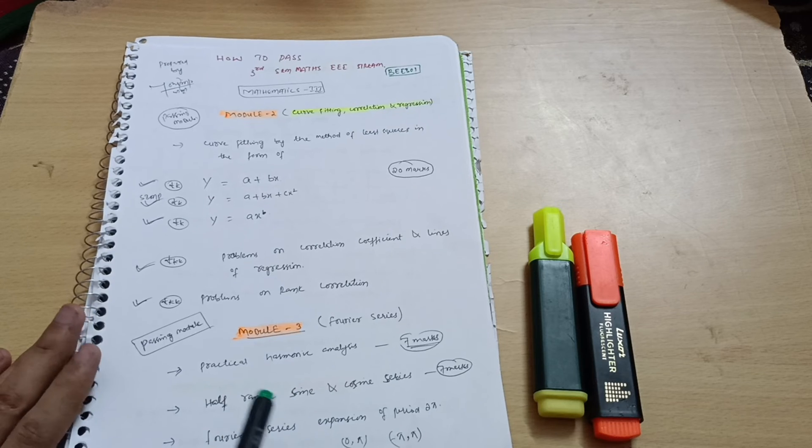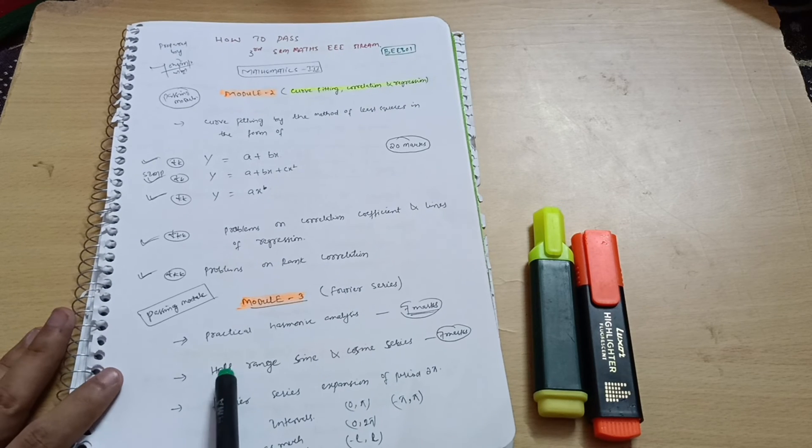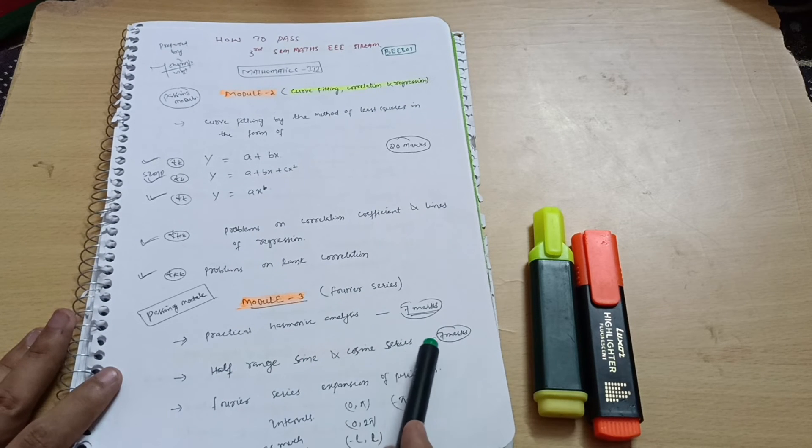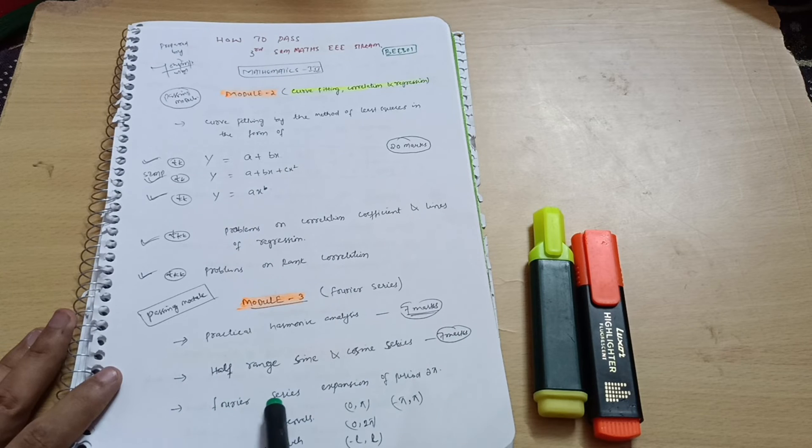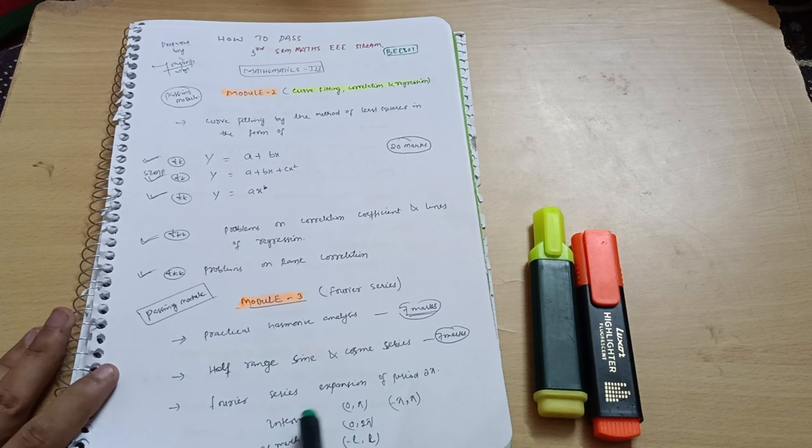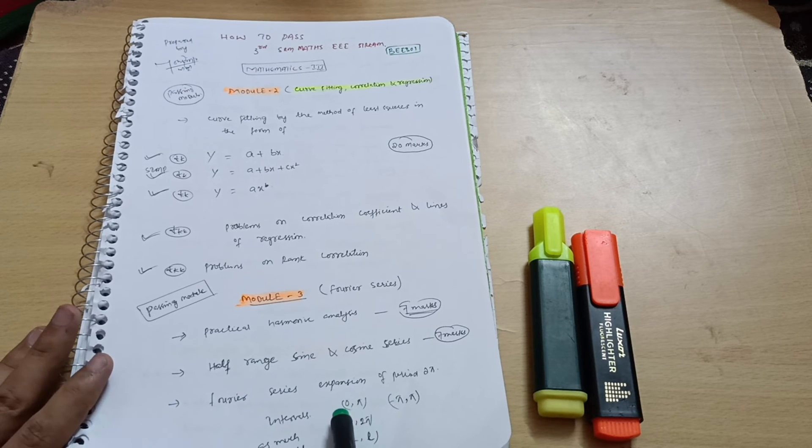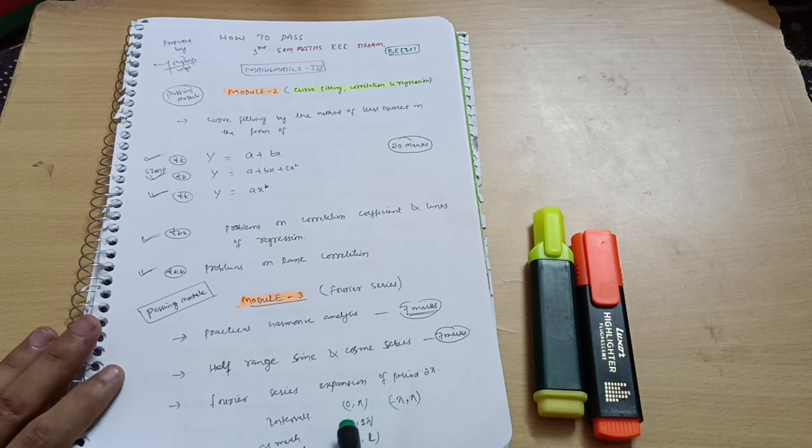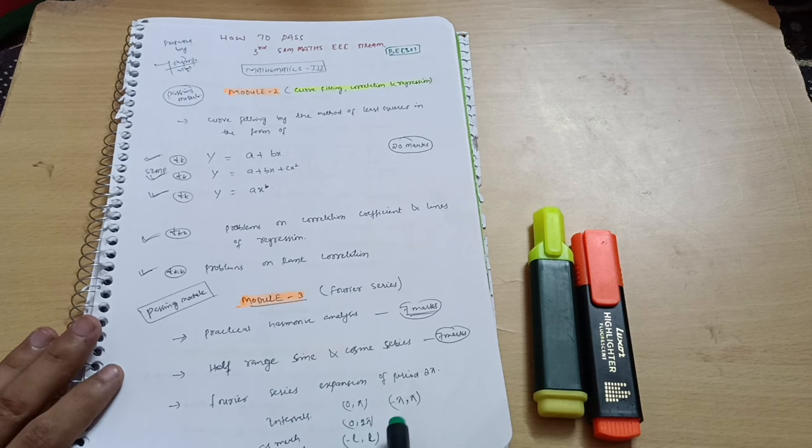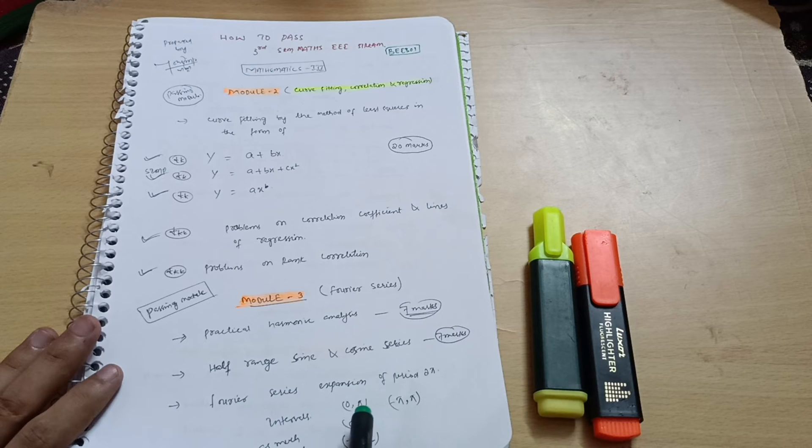Next is half range sine and cosine series. It will be the seven marks question. Fourier series expansion of period 2π. They will give you sometimes the intervals. Function will be given, f(x) will be suppose mod of x, okay, whatever the function it may be. The intervals will be 0 to π, 0 to 2π, minus l to l, and minus π to π. These will be the intervals. So you have to solve the Fourier series for that particular interval.